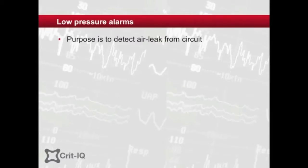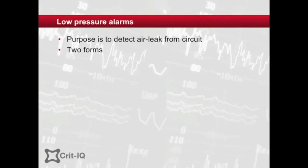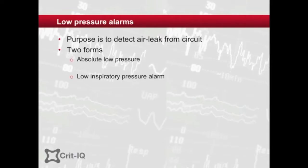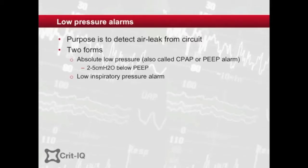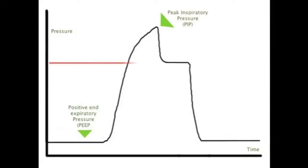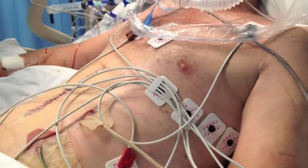The purpose of a low pressure alarm is to detect when air is escaping from the circuit to a degree that the circuit pressure drops. This can be either an absolute pressure or the inspiratory pressure. The former is sometimes known as a low CPAP or low PEEP alarm, with the threshold set to 2–5 centimetres of water below the set PEEP; failure to maintain this is a sign of a major leak. In the latter, the alarm can be set 5–10 centimetres of water below the expected peak, and failure to achieve this value suggests a major leak, including disconnection. Confirmation can be achieved by the loss of a capnograph trace and the failure of the chest to rise and fall.